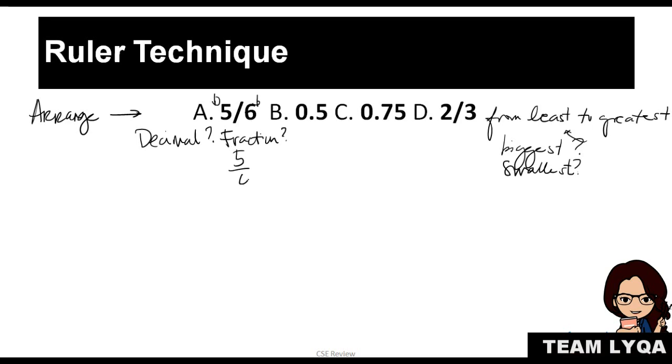The other option would be to turn them all into fractions. If I make it a fraction, it becomes 5 over 6. 0.5 becomes 5 over 10 because I moved the decimal once. 0.75 would be 75 over 100 because I moved it twice. Then you have 2 over 3. When they're fractions, you can't arrange them yet because they don't have the same denominator. To make the denominators the same, we would find the LCD or least common denominator.